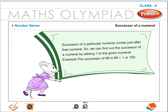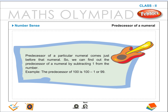Successor of a numeral: The successor of a particular numeral comes just after that numeral. We find the successor by adding 1 to the given numeral. Example: The successor of 99 is 99 + 1, or 100. Predecessor of a numeral: The predecessor comes just before that numeral. We find the predecessor by subtracting 1 from the numeral. Example: The predecessor of 100 is 100 − 1, or 99.